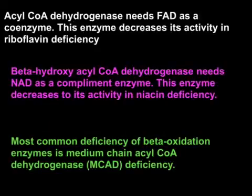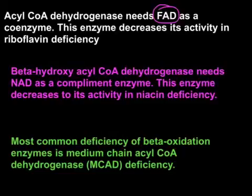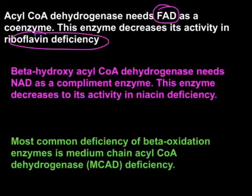Some important clinical points: acyl-CoA dehydrogenase requires FAD, which is derived from riboflavin — so riboflavin deficiency causes decreased acyl-CoA dehydrogenase activity. Beta-hydroxyacyl-CoA dehydrogenase requires NAD as a coenzyme, which is derived from niacin.